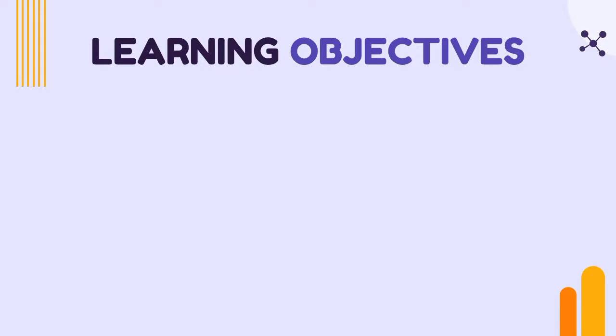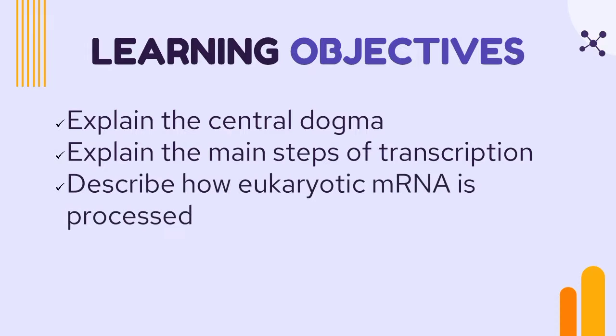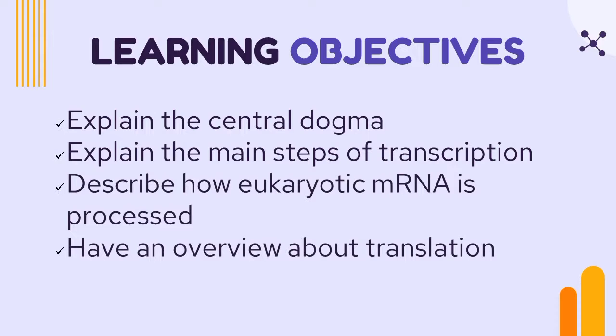So for our learning objectives, we have: explain the central dogma, explain the main steps of transcription, describe how eukaryotic mRNA is processed, and last is to have an overview about translation.